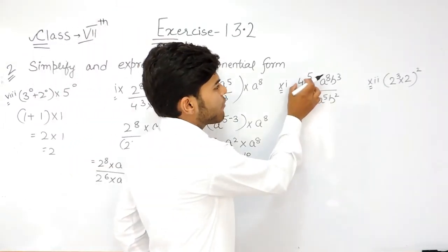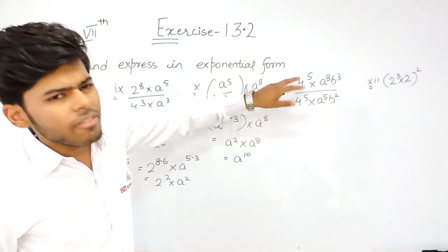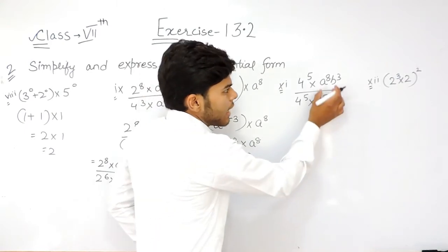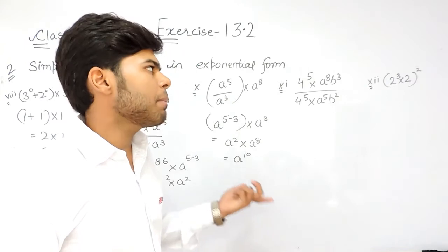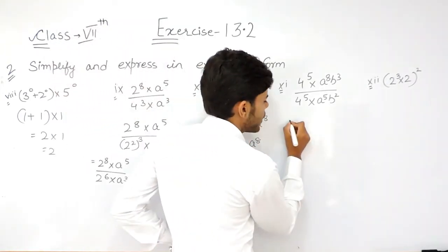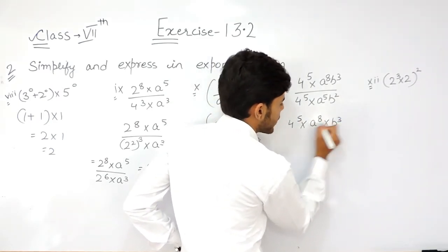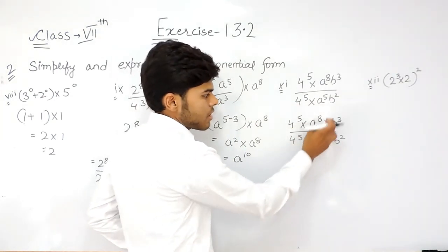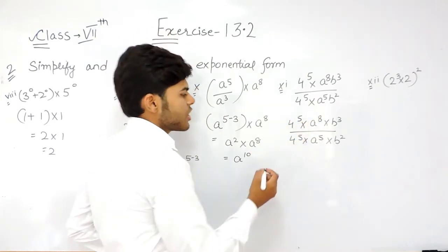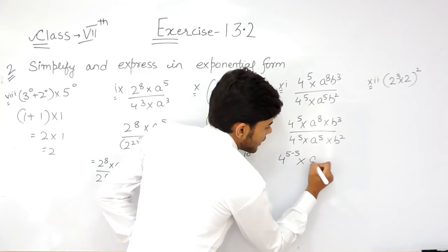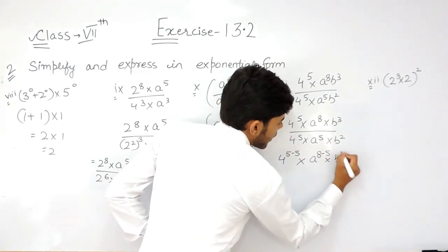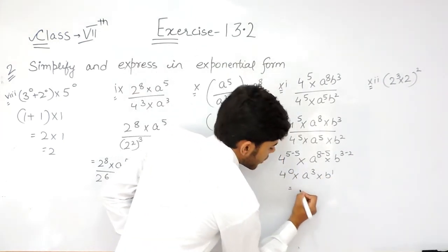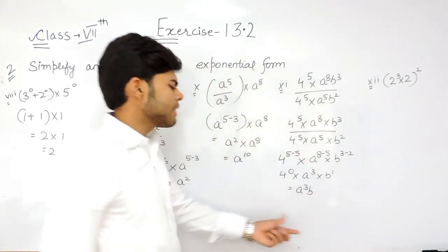In this question we are already given 4 to the power 5 in both numerator and denominator, so we will not convert it to prime factorized form since they are the same term. We can write this as 4 to the power 5 into a to the power 8 into b to the power 3 upon 4 to the power 5 multiplied with a to the power 5 multiplied with b to the power 2. Same base, so powers go to the numerator with a sign change: 4 to the power 5 minus 5, multiplied with a to the power 8 minus 5, multiplied with b to the power 3 minus 2. That gives 4 to the power 0 into a cubed into b to the power 1. Since anything to the power 0 is 1, our answer is a cubed multiplied with b, or simply a³b.